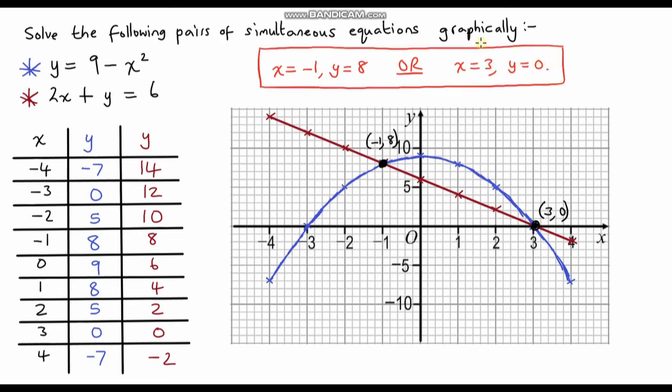So that is how we solve simultaneous equations graphically. We're always looking for the point or points of intersection — depending on whether we've got a quadratic or not — and sometimes you will need to graph the equations yourself first.